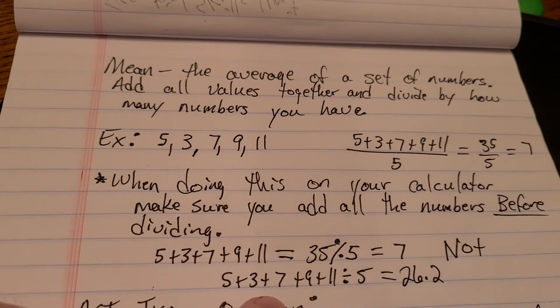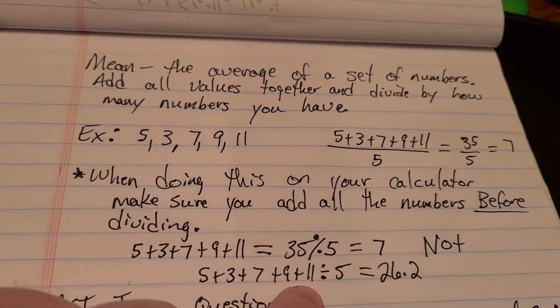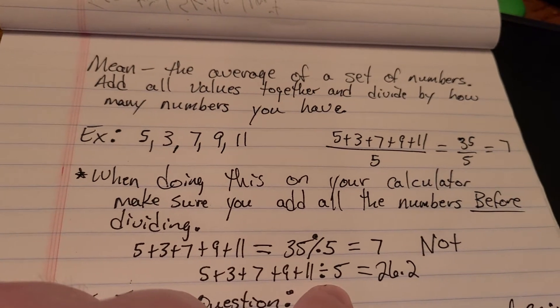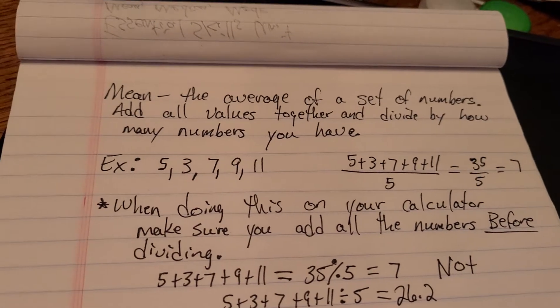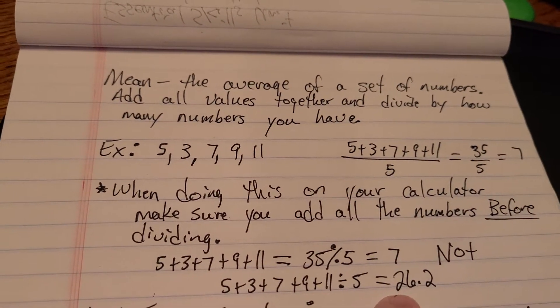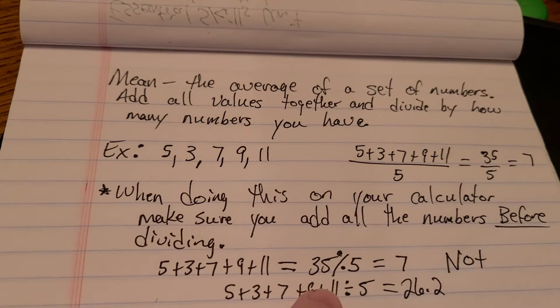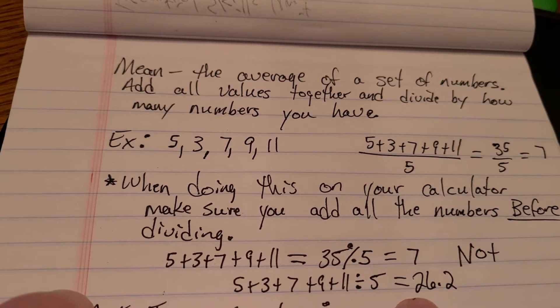But if you don't, if you type it in like this, 5 plus 3 plus 7 plus 9 plus 11 and then you hit divide by 5, it's going to give you 26.2. Which hopefully you would look at and say, that doesn't make any sense.